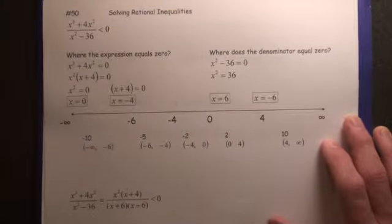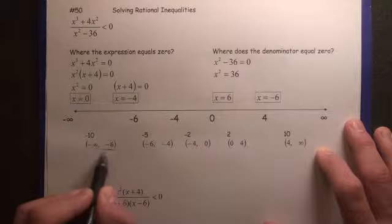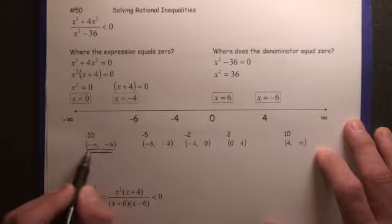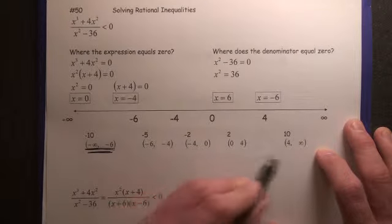Now what we're going to do is test these different boundaries. Because remember, this is an inequality, so therefore each of these intervals—excuse me, not boundaries, intervals—is a potential correct answer.